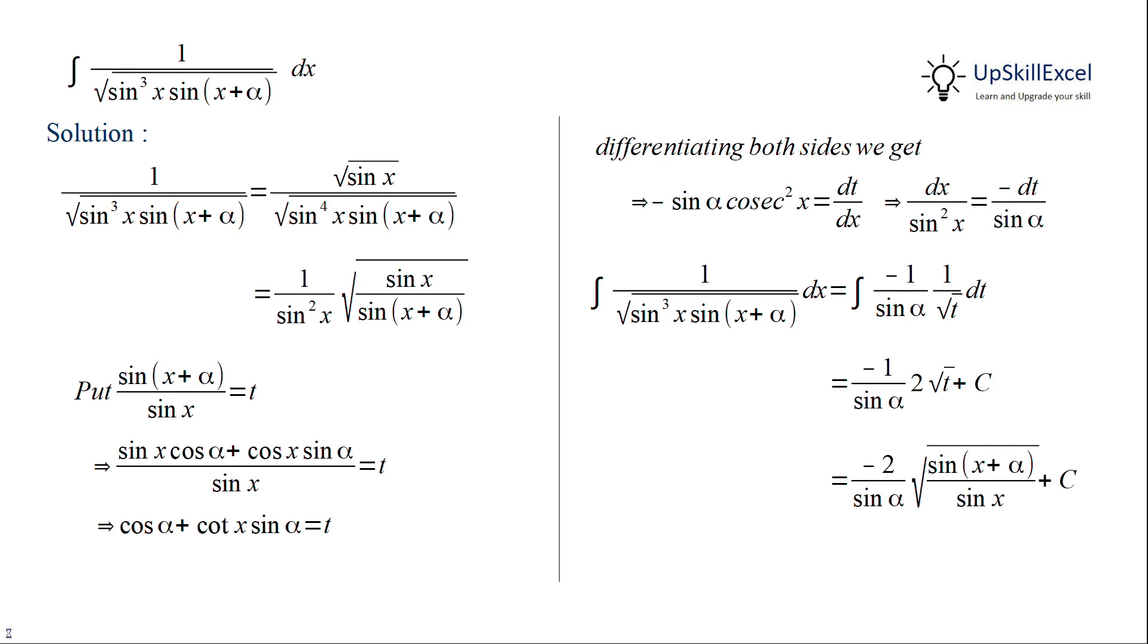Now we'll substitute t back in terms of x, giving us the result as minus 2 over sin α times the square root of sin(x + α) over sin x plus C.